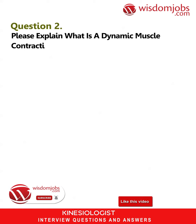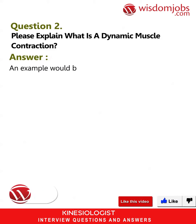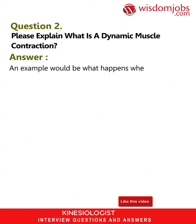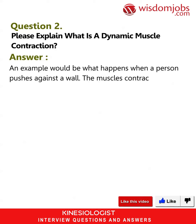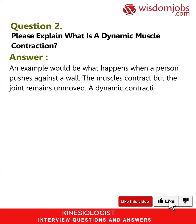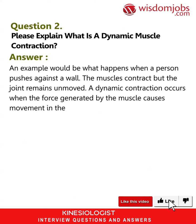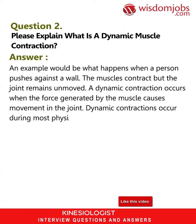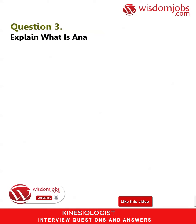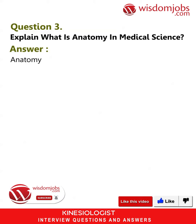Question 2: What is a dynamic muscle contraction? An example would be what happens when a person pushes against a wall — the muscles contract but the joint remains unmoved. A dynamic contraction occurs when the force generated by the muscle causes movement in the joint. Dynamic contractions occur during most physical activities.